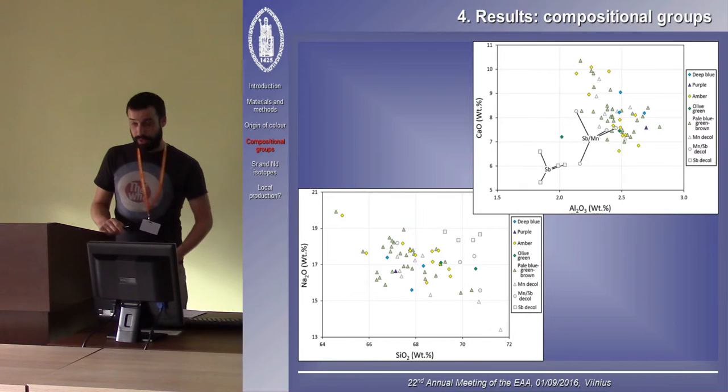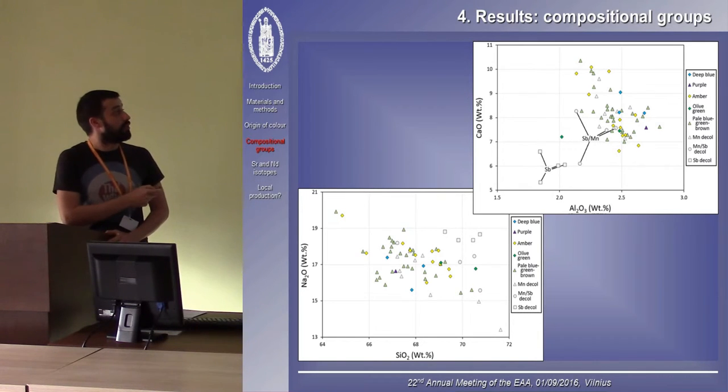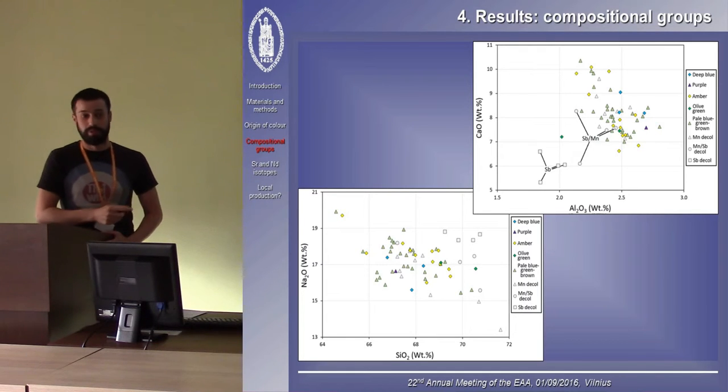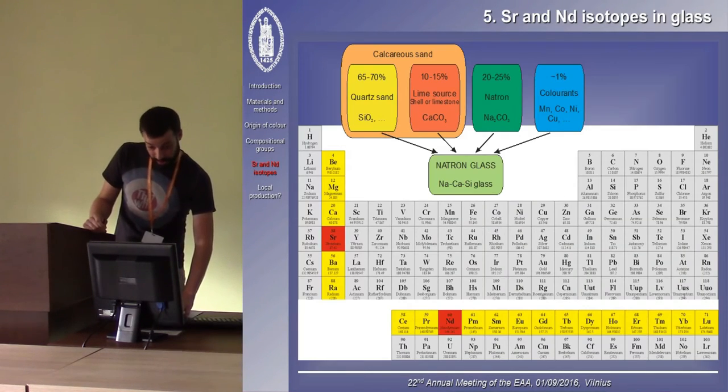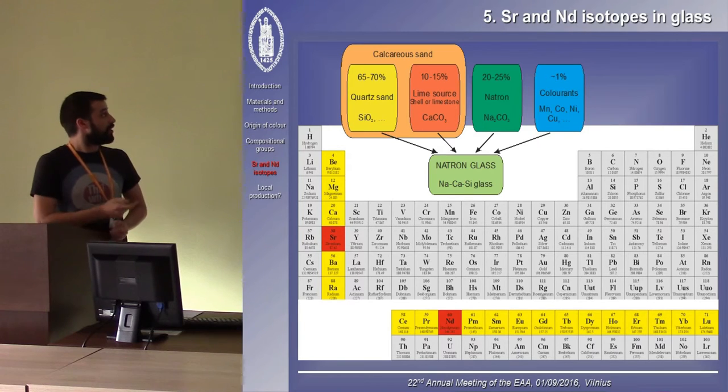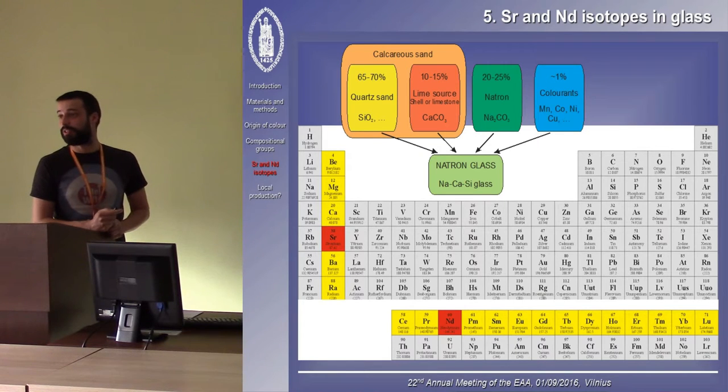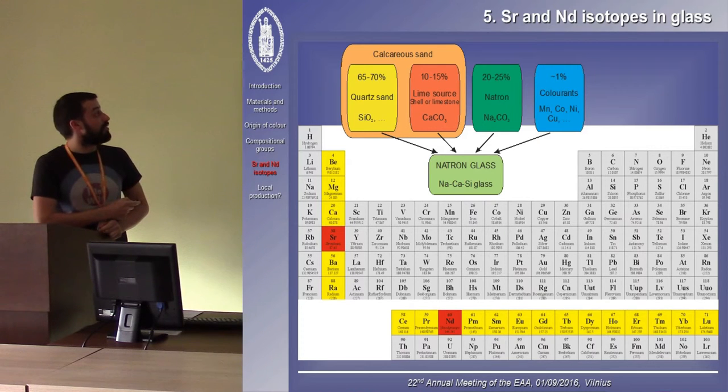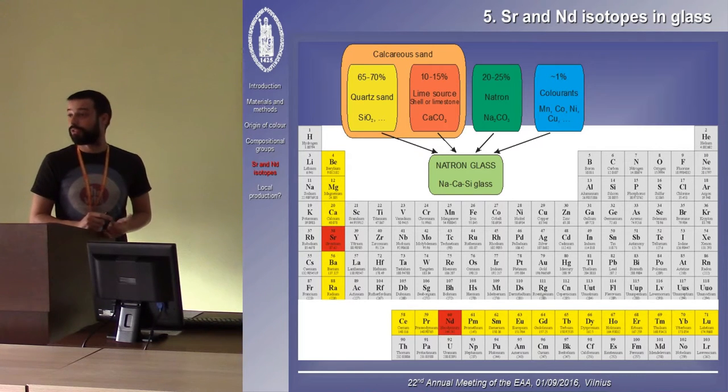But how can we determine where these glasses actually were made? We clearly see two different groups, our major group with all the colored glasses and the manganese decolored glass, and the antimony decolored group. Maybe we can get more information from isotopic composition. In glass studies, especially the radiogenic isotopes of strontium and neodymium are of interest. Strontium belongs to the alkaline earth group of the periodic table and has very similar geochemical properties as calcium. So the strontium in our natron glass is mostly coming in with the source of lime. The isotopic signature of strontium in the glass will reflect the origin of the lime.